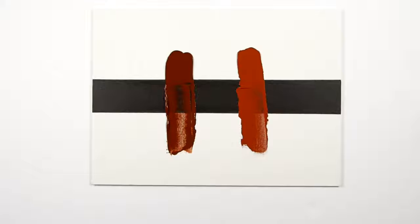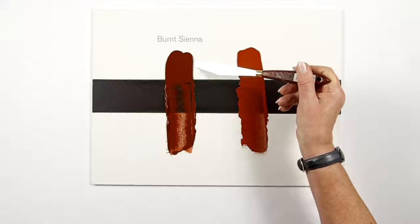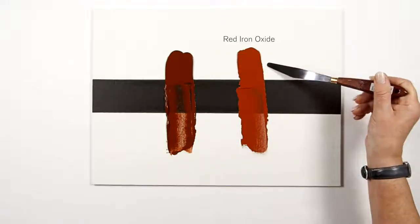As you can see from these drawdowns, the mass tone of the burnt sienna is much redder and deeper than the red iron oxide which looks paler and yellow in comparison.